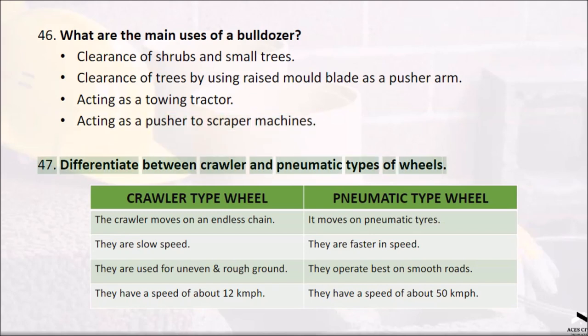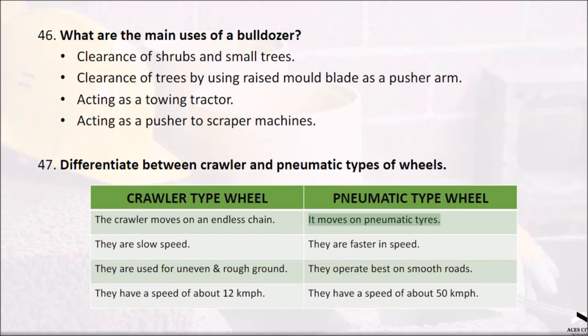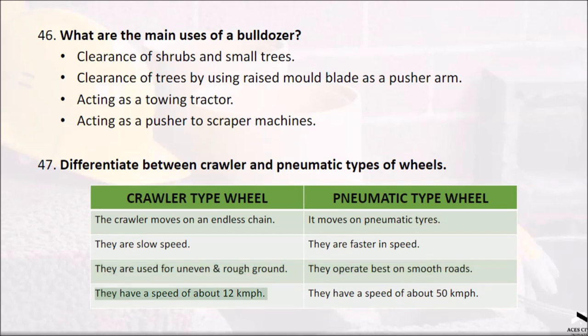Question 47: Differentiate between crawler and pneumatic types of wheels. Crawler type wheel moves on an endless chain — it is slow speed, used for uneven and rough ground, with a speed of about 12 kmph. Pneumatic type wheel moves on pneumatic tires — it is faster in speed, operates best on smooth roads, with a speed of about 50 kmph.